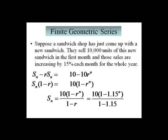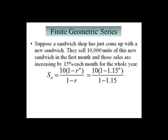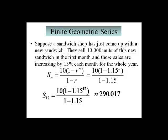For our problem, our common ratio is 1.15. Now we have a formula that calculates the total number of sandwiches for n months — it calculates the sum of the geometric series. For our problem, we're looking for the number of sandwiches during the first year, that means 12 terms, so n is 12. We get 10 times 1 minus 1.15 to the 12th, divided by 1 minus 1.15, which gives us about 290.017. Since I changed 10,000 to 10, I multiply by 1,000, giving us 290,017 sandwiches sold during the first year.